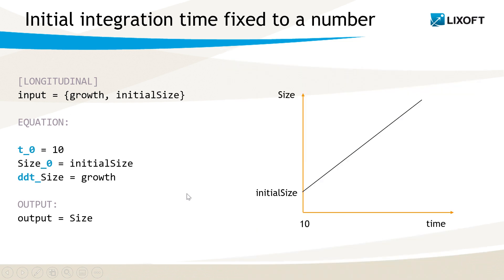It is possible to use any number for the initial integration time, not only 0. This number can be positive, like here, or negative, but it cannot be a parameter or a regressor.